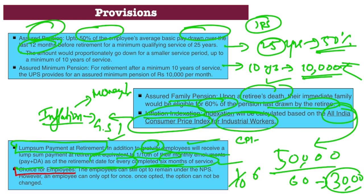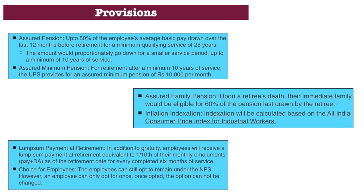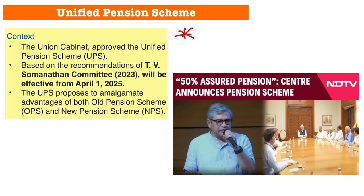The last important provision is the choice available to employees: they can choose between the Old Pension Scheme, New Pension Scheme, or UPS. It is not mandatory for all government employees to opt for UPS — they can opt for OPS, NPS, or any scheme of their choice. The Unified Pension Scheme is a new and important scheme. This was a brief but important overview of the Unified Pension Scheme. We will come up with other important videos. Till then, take care. Thank you.